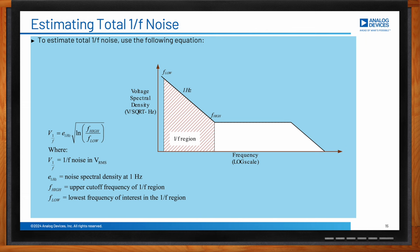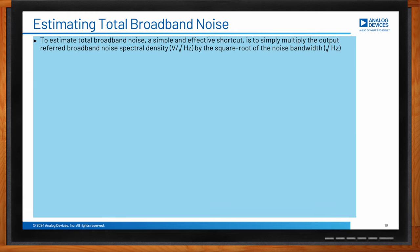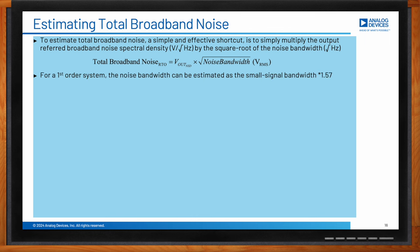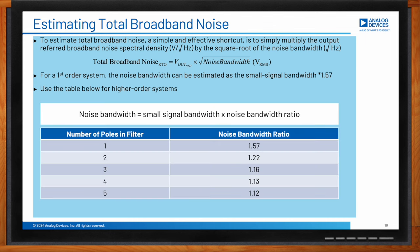To estimate broadband noise, multiply the output-referred noise spectral density by the square root of the noise bandwidth, giving units of volts RMS. For a first-order system, noise bandwidth is 1.57 times the small signal bandwidth. For higher-order systems, refer to a table of multiplying factors. When you've calculated 1/f noise and broadband noise, add them as the square root of the sum of squares — and you'll find that broadband noise completely dominates in wideband applications.